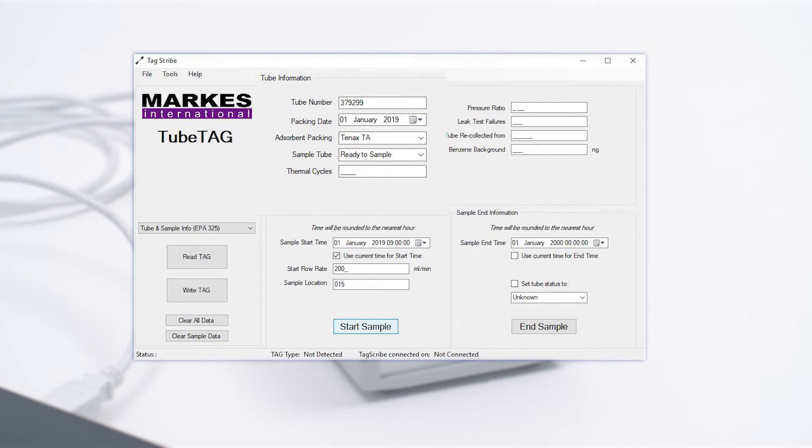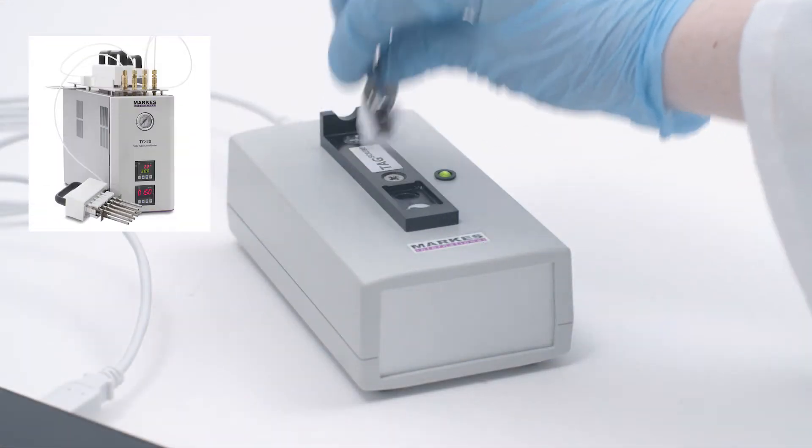In the software, populate the tube number, packing date and adsorbent packing fields and click Write Tag. You are now ready to condition your tube.